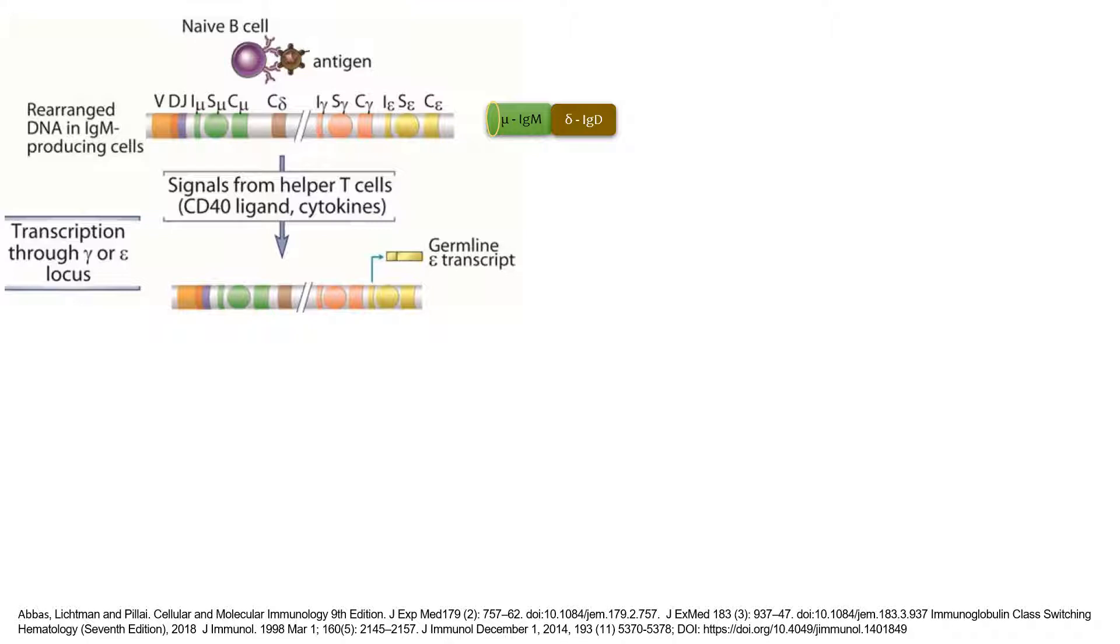The construct for IgD, the C delta, does not have a switch gene before. The B cells can actually express IgM and IgD on the same cell at the same time. This is not the case for the rest of the isotypes.